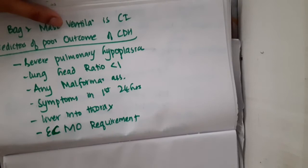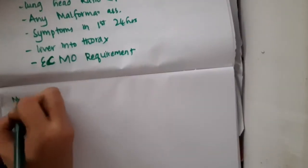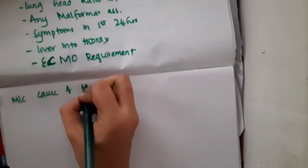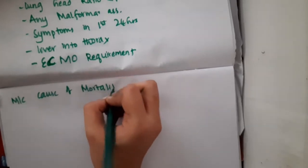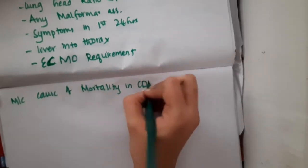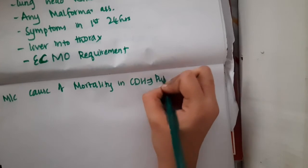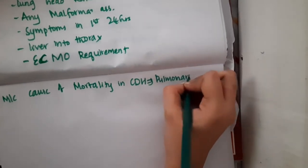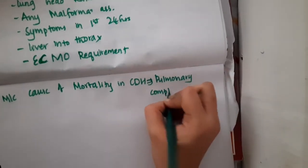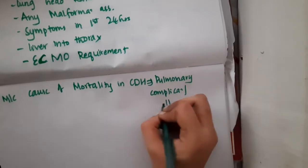The most common cause of mortality in congenital diaphragmatic hernia is pulmonary complications or pulmonary hypoplasia.